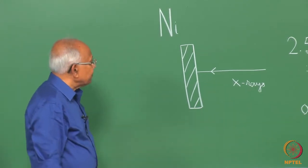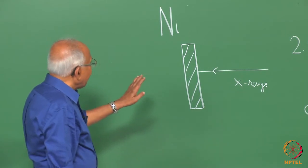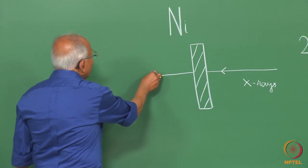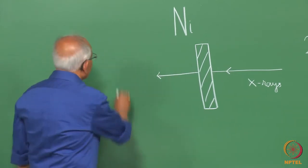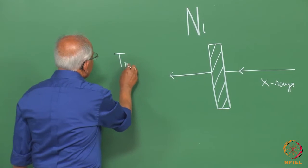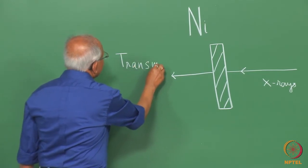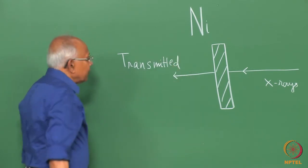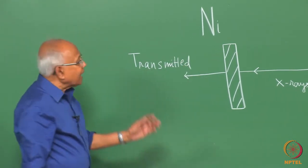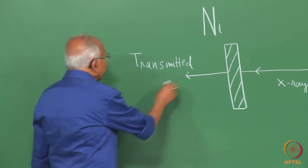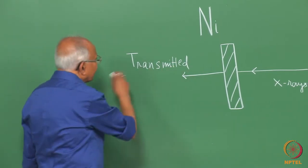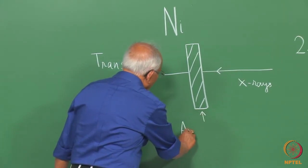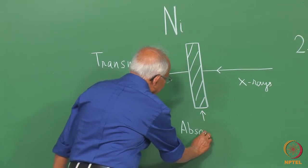Now if we do that, and if after every bombardment we find out how much of the beam is transmitted, we can find out how much is absorbed also. The incident beam minus the transmitted beam, part of the beam will be absorbed by the nickel piece.